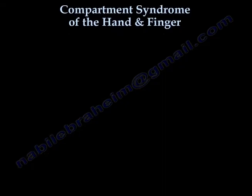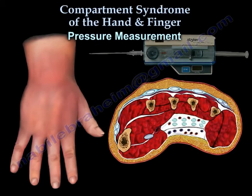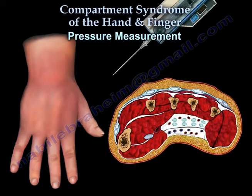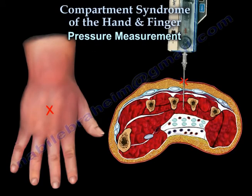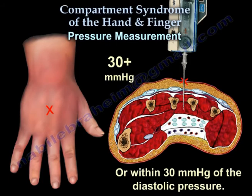Here's an example for pressure measurement of the hand. A fasciotomy is needed if the compartmental pressure is greater than 30 mmHg or within 30 mmHg of the diastolic pressure.